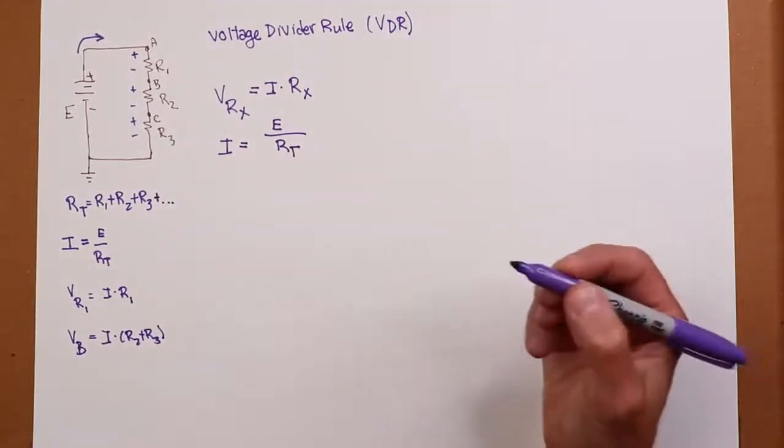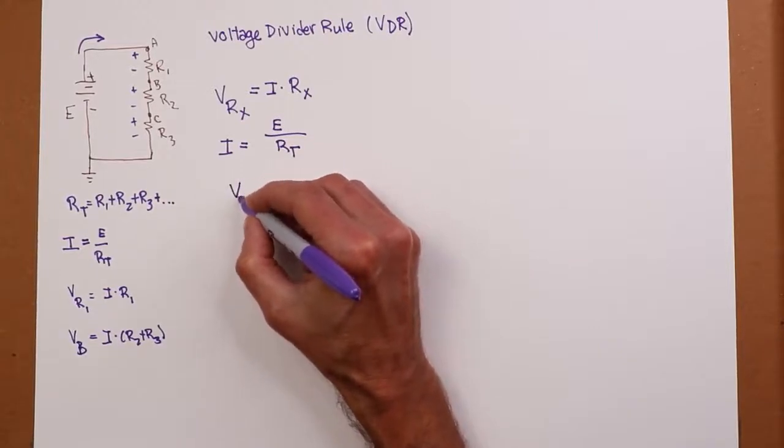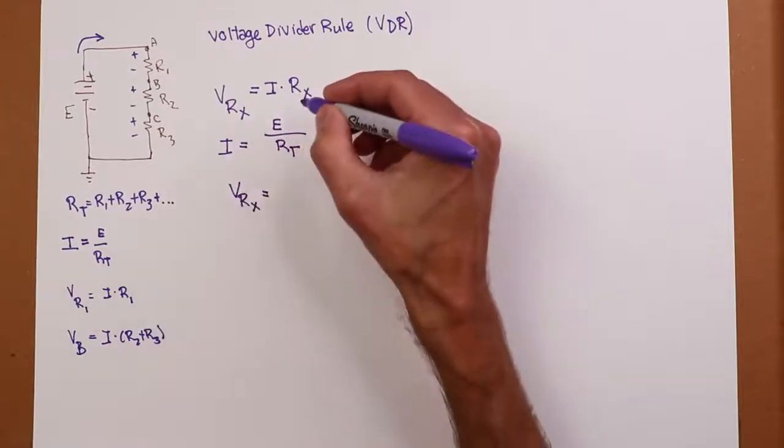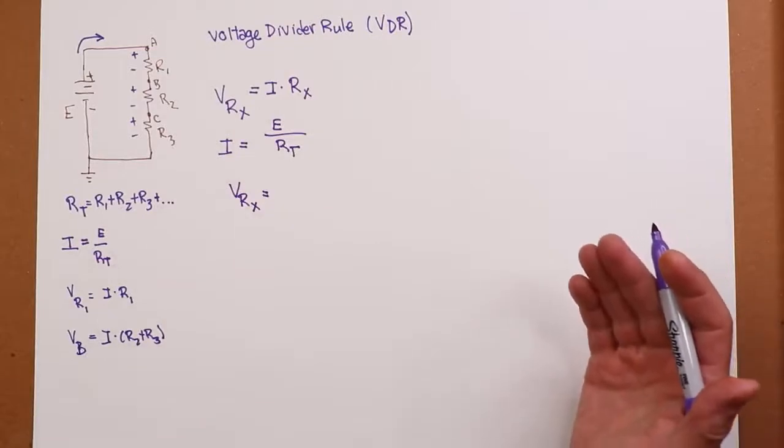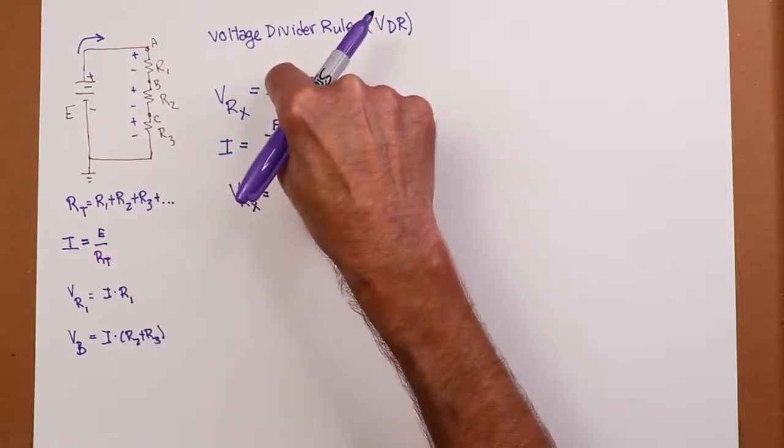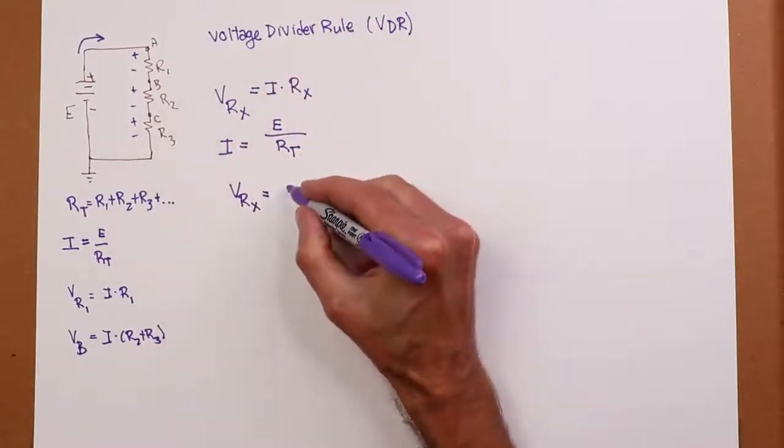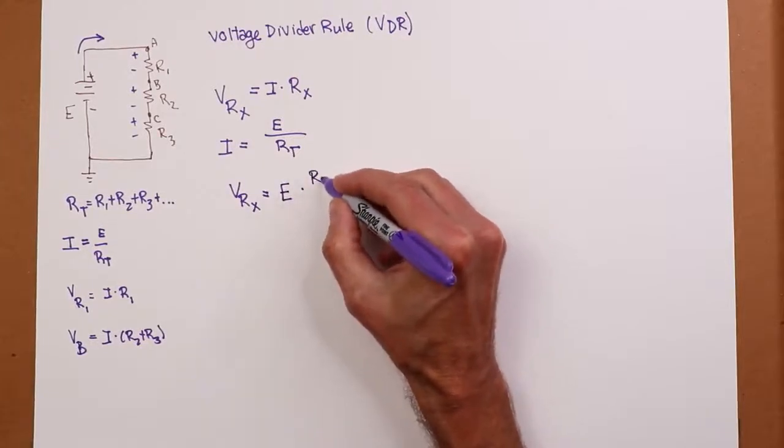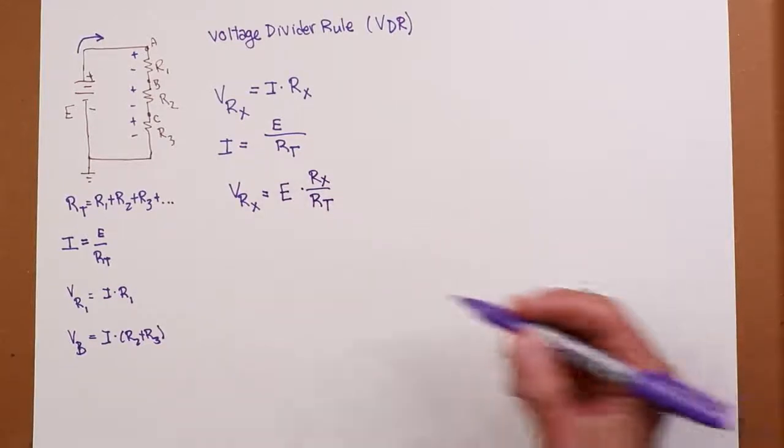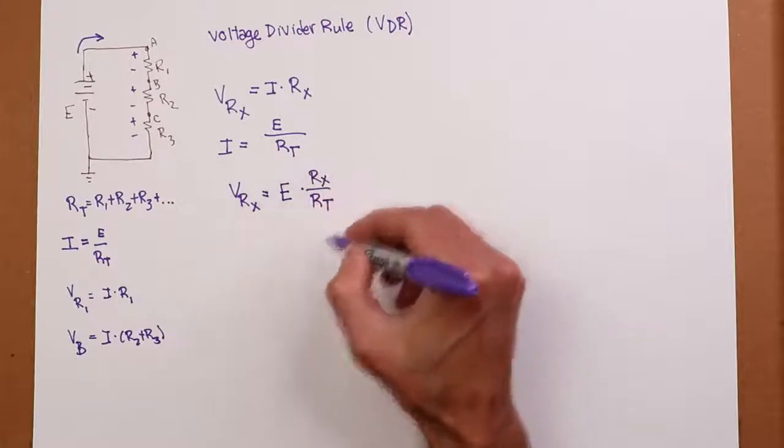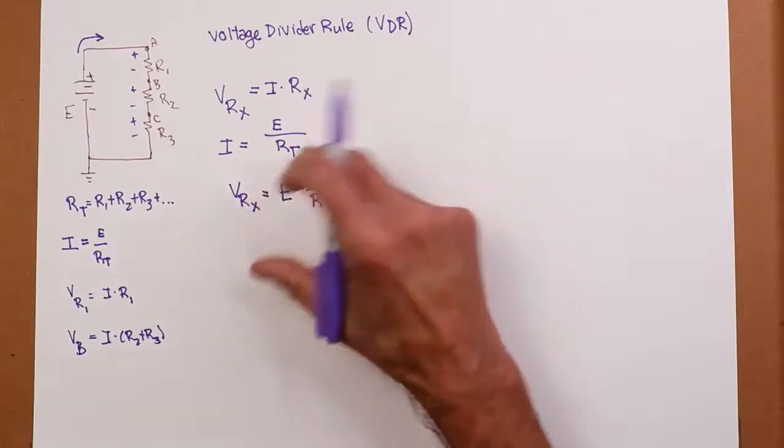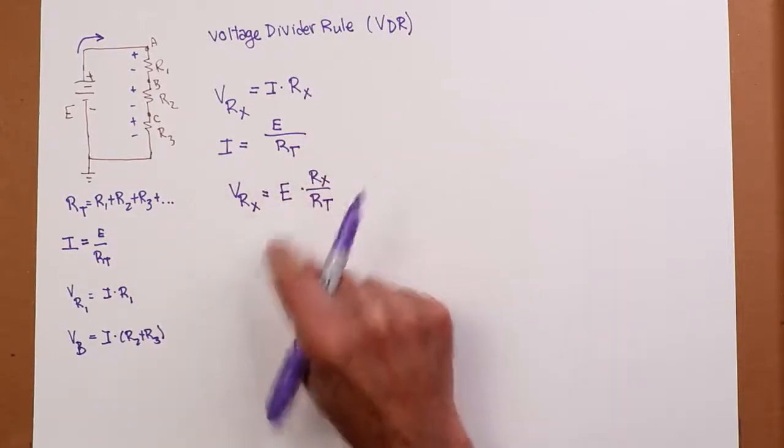Then we say V of Rx must equal this current times that calculated resistance. Well, if you think about it for a second, just take this and substitute it in. And what we're saying is V of Rx is E times Rx over R total. I don't actually have to find the current. This is saying this is the proportion of the resistance. This is the percentage of Rx out of the total, and that same proportion, that same percentage, is what we get out of the voltage.